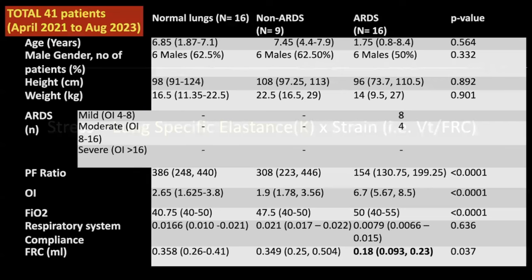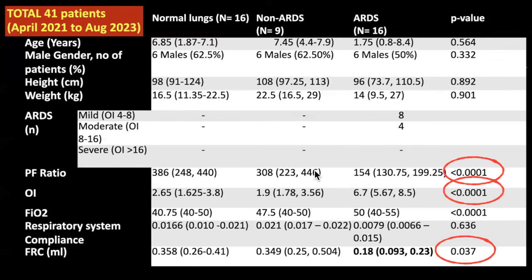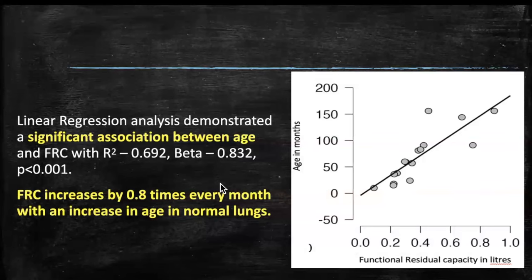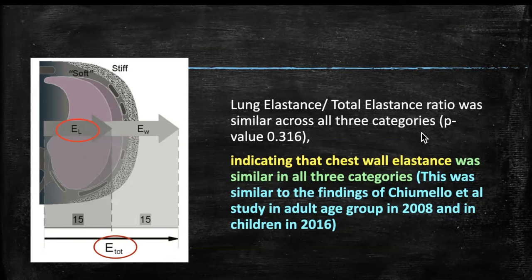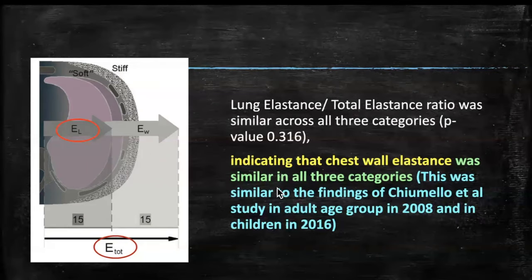In the 41 patients, 16 had normal lungs, 9 had non-ARDS lung disease, and 16 had ARDS. PF ratio was significantly lower and respiratory rate significantly higher in ARDS patients. FRC was significantly lower in ARDS compared to normal lungs. There was a linear relationship between FRC and age — FRC increased by 0.8 times every month with increasing age in normal lungs. The single elastance to total elastance ratio was only 0.3, indicating normal chest wall elastance in all groups — nobody had poor chest wall elastance.